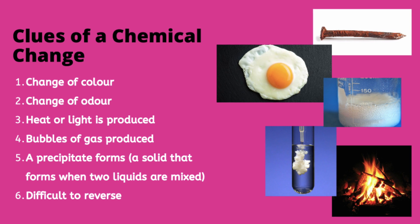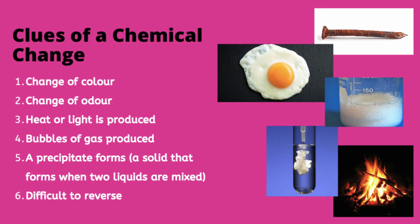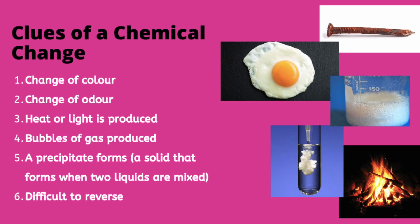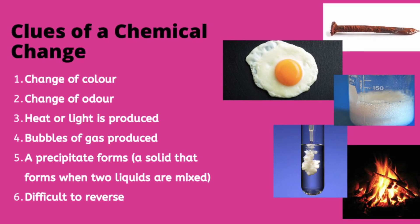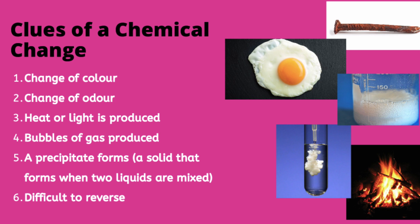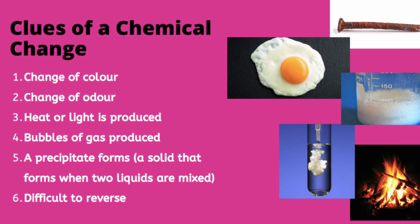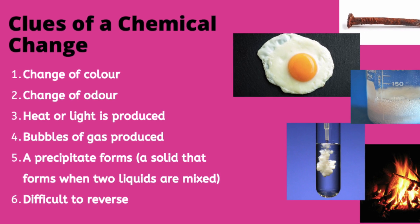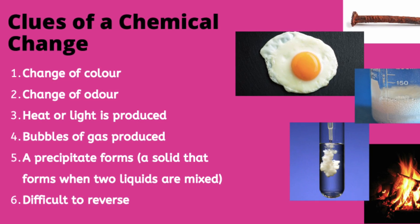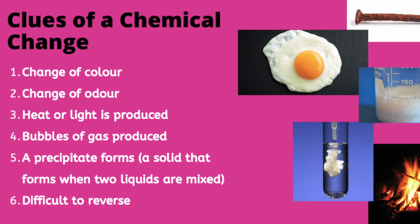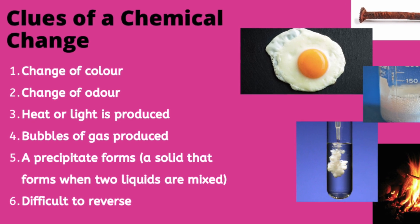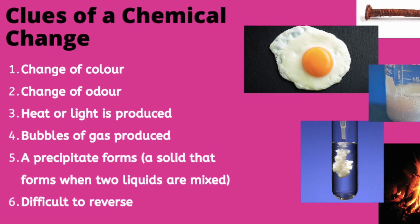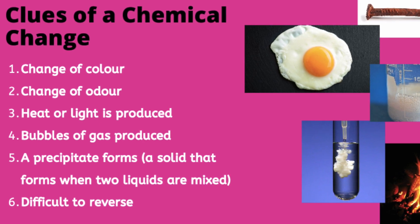Some clues that indicate a chemical change has occurred include: a change of colour, where the new substance has a different colour than the original substance; a change in odour, where the new substance is formed with a detectable odour; heat or light is produced; bubbles of gas are produced that are not caused by heating; a new solid called a precipitate is formed when two liquids are mixed together; and the change is difficult to reverse.